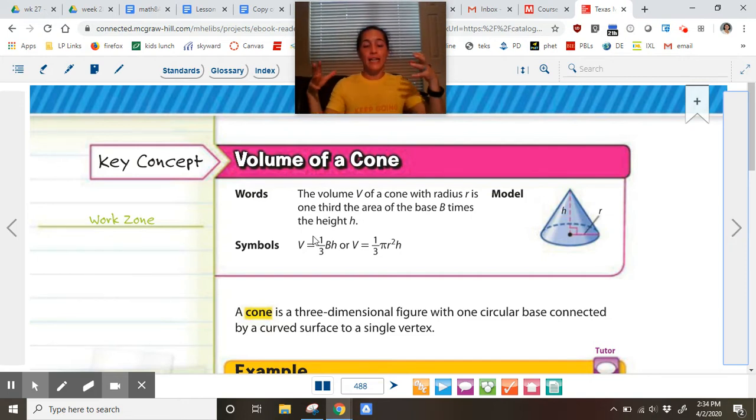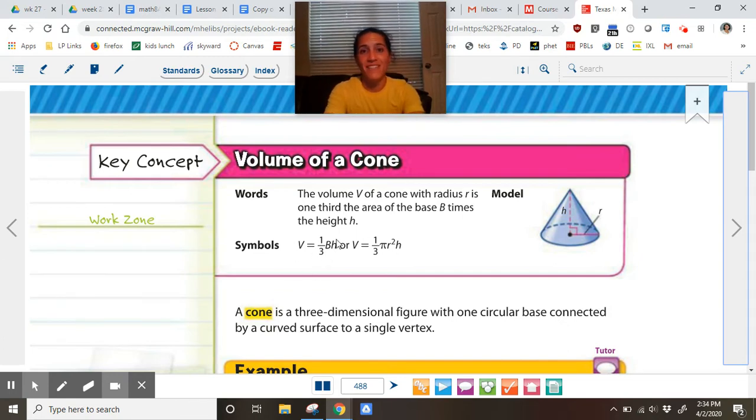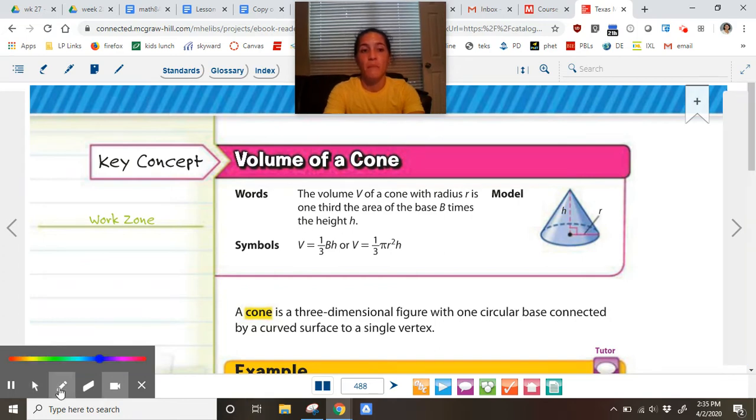Again, if we were in class, I would have a cylinder and a cone and I would fill up the cone with water and pour it into the cylinder. We would see how many cones it would take to fill up the cylinder. I do this every year and all the students say it takes three. That means one cone is a third of a cylinder because it takes three to make one whole, and that's where the formula comes from.